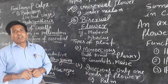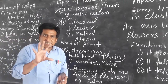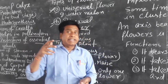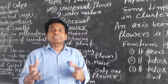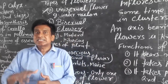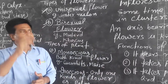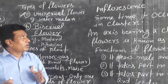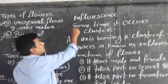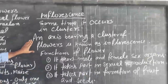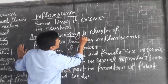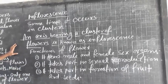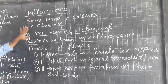Sometimes a plant produces a single flower on a single axis. But sometimes we see that they produce a cluster of flowers. When a cluster of flowers is produced, that entire axis bearing the cluster of flowers is called an inflorescence. The definition is: an axis bearing a cluster of flowers is known as inflorescence.